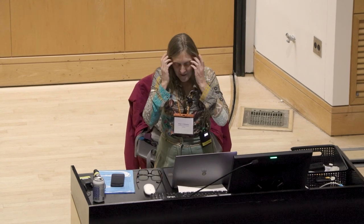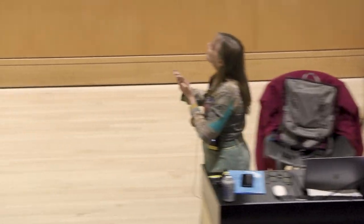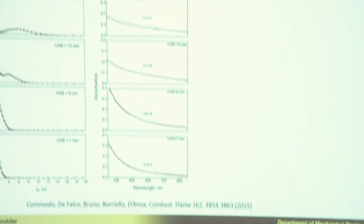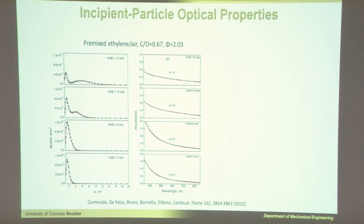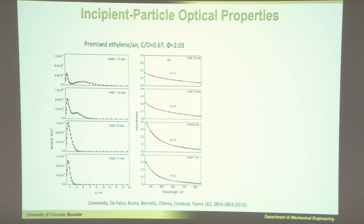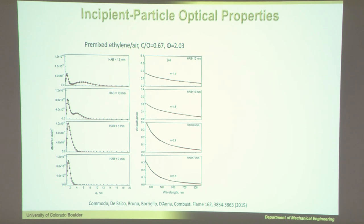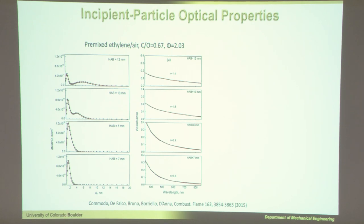Back to soot. You saw the size distributions before for a premixed flame with ethylene as a fuel at different heights of the flame. The right-hand side is the extinction spectrum. I'm not sure if they extracted the soot and then measured the extinction. Some measurements were extracted and some are in the flame itself — extinction in the flame. There are some issues with doing extinction in the flame, but let's say this is the spectrum of the soot from the flame.